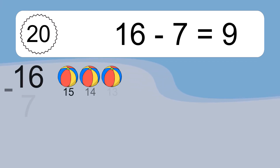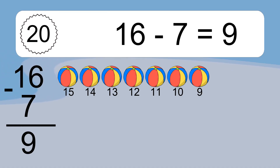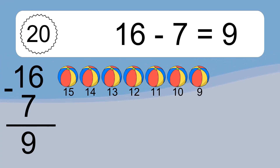16 minus 7 equals what? 16 minus 7 equals 9. Let's count it: 15, 14, 13, 12, 11, 10, 9.